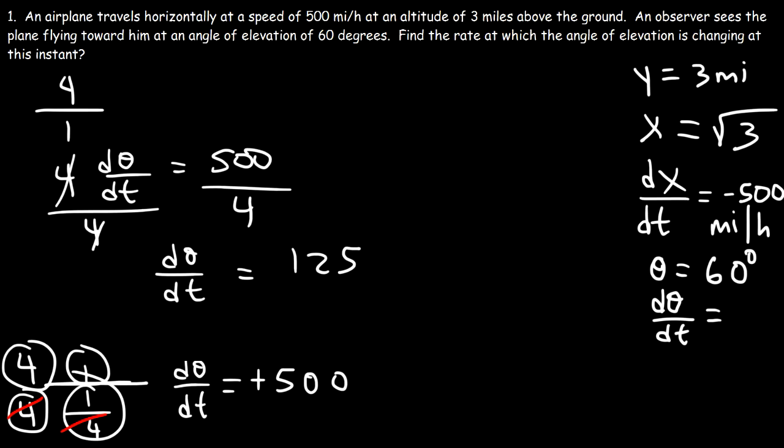Now what are the units for dθ/dt? Theta is going to be in radians, unless specified otherwise. And time, we can see that time is in hours. So it's going to be radians per hour. So that's the rate at which the angle is changing per hour.